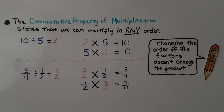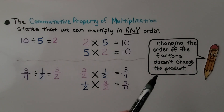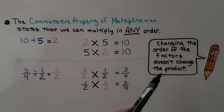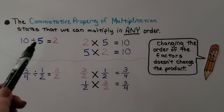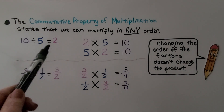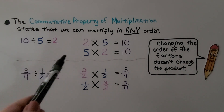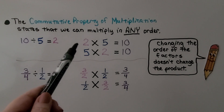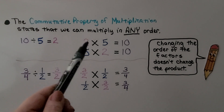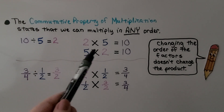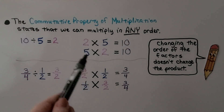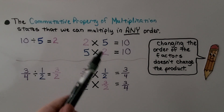The commutative property of multiplication states that we can multiply in any order. Changing the order of the factors doesn't change the product. So 10 divided by 5 is equal to 2, and we can write it as a multiplication equation as 2 times 5 or 5 times 2. Their order doesn't matter for the factors.